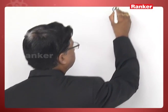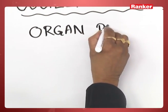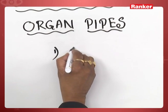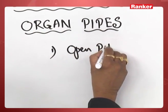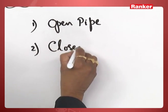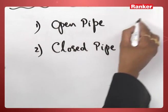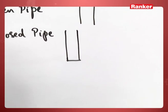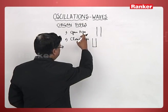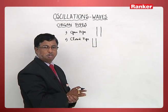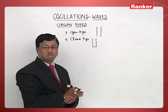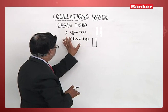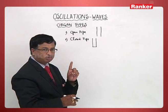So, organ pipes we are talking about. One is an open pipe and the second one is a closed pipe. Open pipe means both sides it should be open, whereas closed pipe means one side it is closed and the other side it is open. These concepts are considered in the case of pipe instruments, which are also called wind instruments — musical instruments like flute, clarinet, and others. So, when we consider open pipe and closed pipe separately, how the harmonics are going to be formed in them.